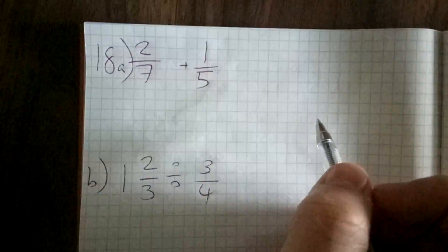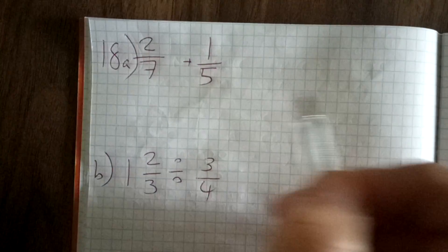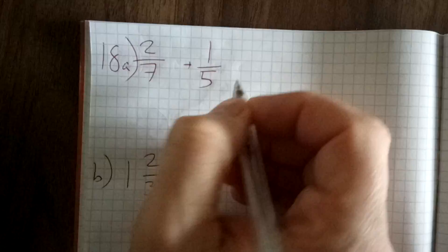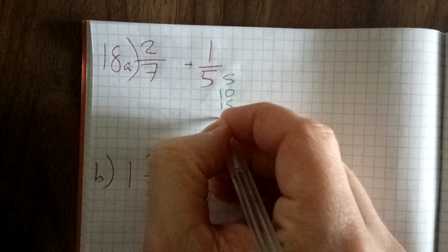Okay, 2/7 plus 1/5. What stops us from adding these together is they've got different denominators, so we've got to find the lowest common multiple. I'm going to list multiples of 5: 5, 10, 15, 20, 25, 30, 35.